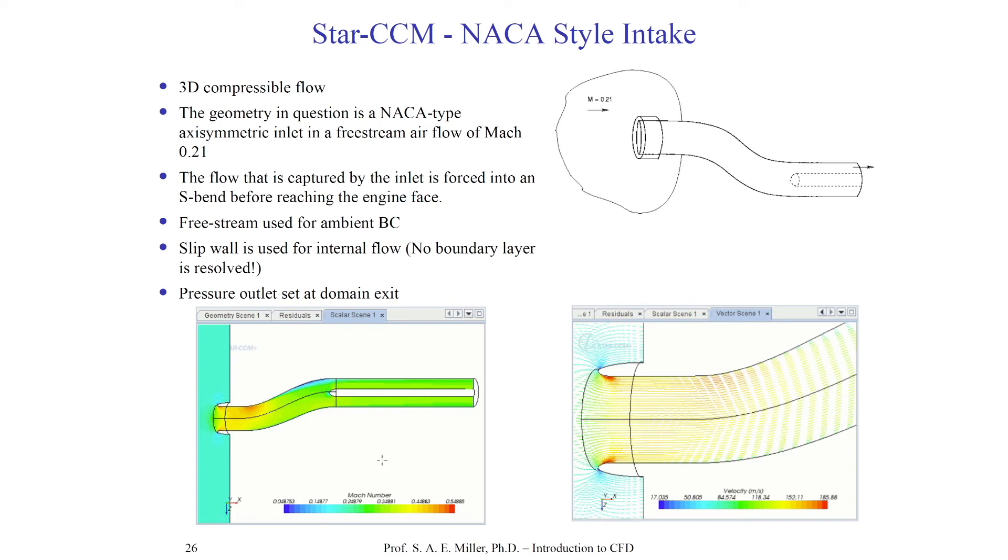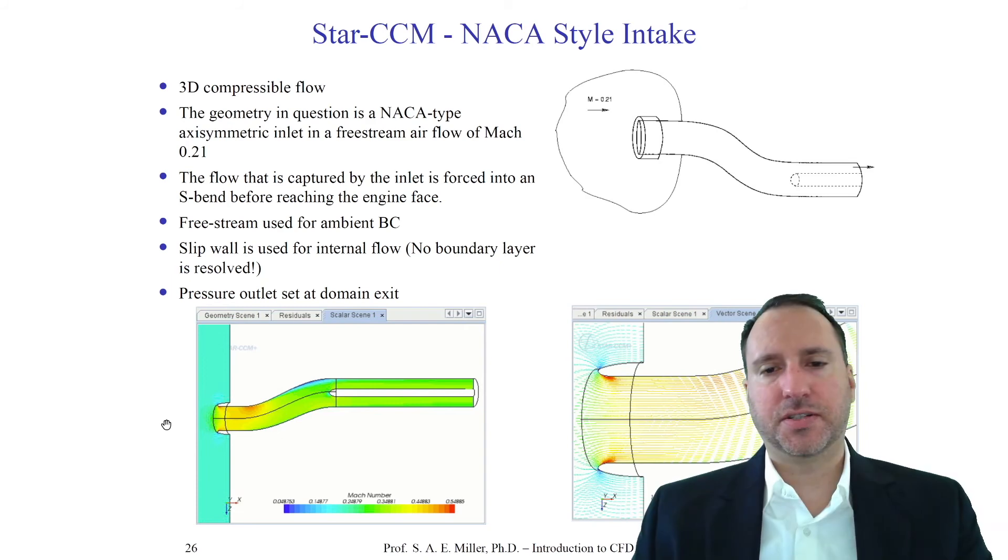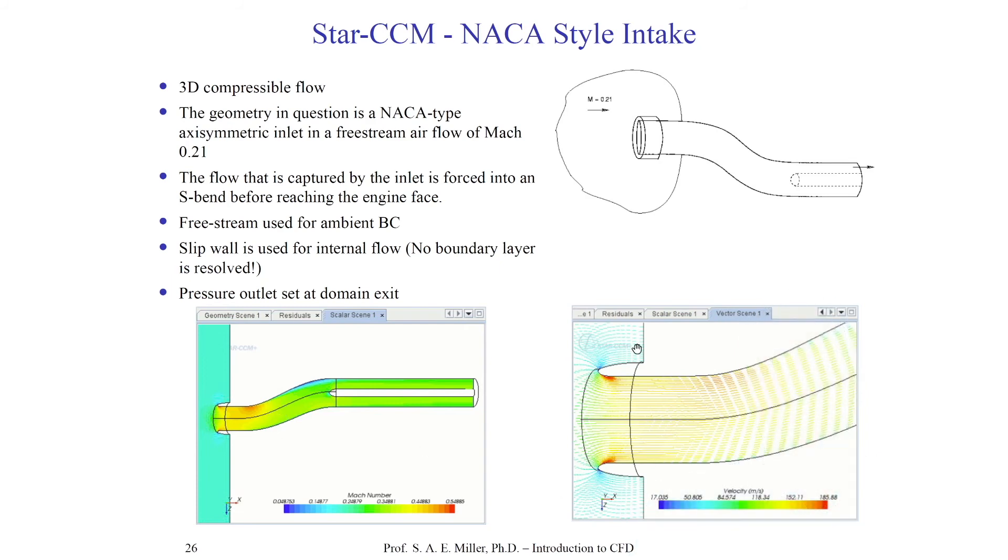In the lower left, you can see how they decompose their domain. They've added the center body and this external part of the aerodynamic solution. Of course, this external part goes far to the left where they specify the far field conditions. In the lower right, you can see one particular velocity vector field near the inlet of this intake. It's a simple process, but I think you're starting to get the idea of how and where to place boundary conditions.